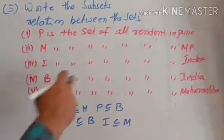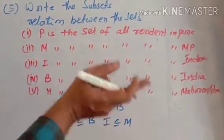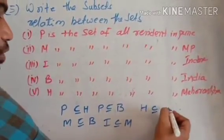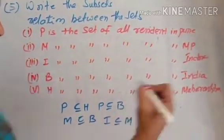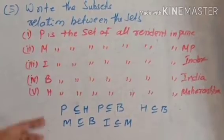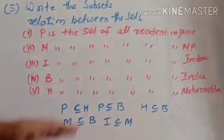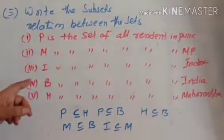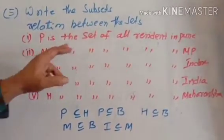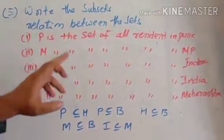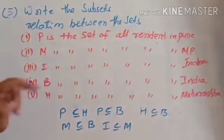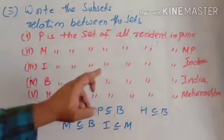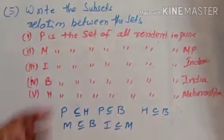Maharashtra is a subset of India. Therefore H is a subset of B. In this case, all the sets are subsets of India, that is B. Therefore B is the universal set for this collection of sets.